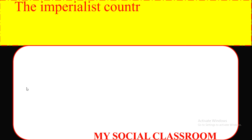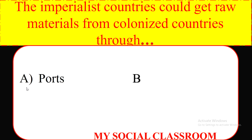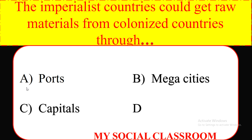The imperialist countries could get raw materials from colonized countries through: ports, mega cities, capitals, cities. Correct answer: ports.